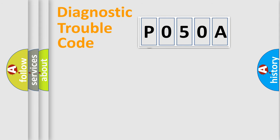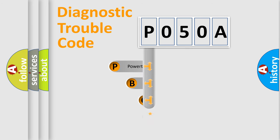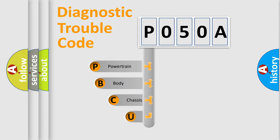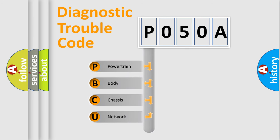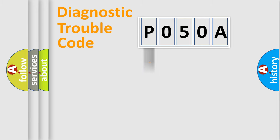First, let's look at the history of diagnostic fault code composition according to the OBD2 protocol, which is unified for all automakers since 2000. We divide the electric system of automobile into four basic units: Powertrain, Body, Chassis, and Network. This distribution is defined in the first character of the code.